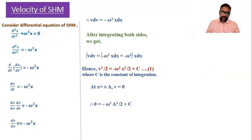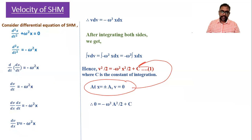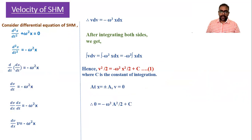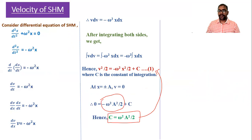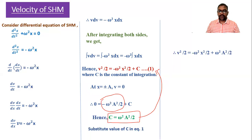Substituting v = 0 and x = a into the equation: 0 = −ω²a²/2 + C. Transferring the negative term to the left side gives C = ω²a²/2. Substituting this value of C back into equation one: v²/2 = −ω²x²/2 + ω²a²/2.